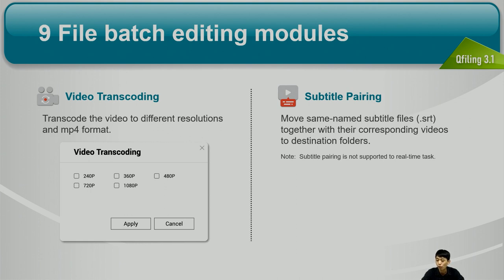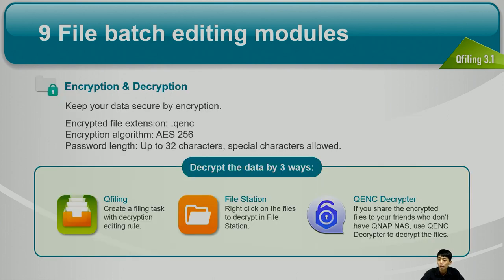The next tools are for video: Video Transcoding, which lets you transcode video to MP4 format and select the resolution. There is also Subtitle Pairing — if you have a subtitle file for a video, it must have the same name, and QFiling 3.1 will move the matching subtitle file together with the video to the destination folder. For data security, we also have an Encryption module. When filing the data, all files will be encrypted in our QENC format using AES-256 algorithm.